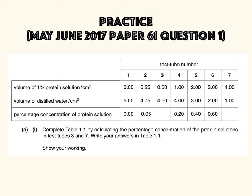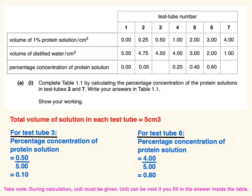You may pause the video and take a few minutes to try the calculation. Now let's check our answer. First, find the total volume of solution in each test tube by adding the volume of percentage protein solution and the volume of distilled water. Each test tube contains 5 cm³ of solution.